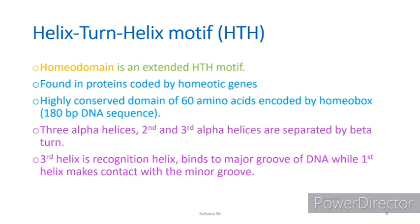The homeodomain is an extended helix-turn-helix motif found in proteins coded by homeotic genes. It is a highly conserved domain of 60 amino acids, and its main characteristic is that it has three alpha helices. The second and third alpha helices are separated by a beta turn. The third alpha helix is the recognition helix because it recognizes and binds to the major groove of DNA, while the first helix makes contact with the minor groove.